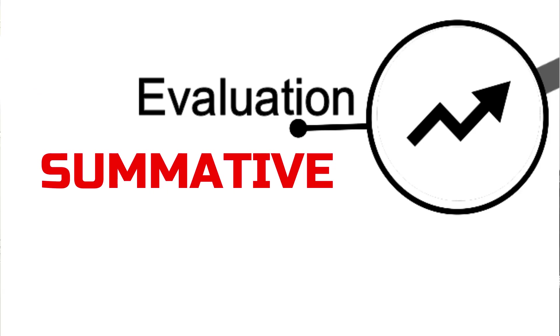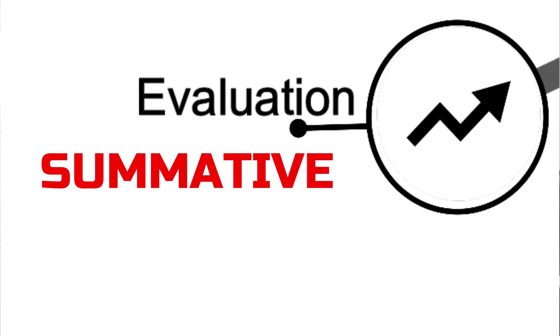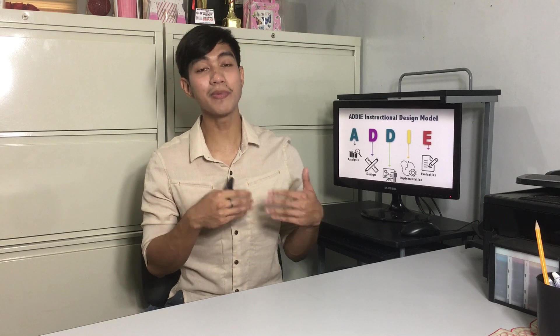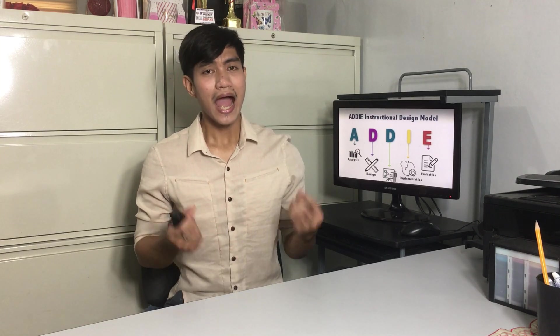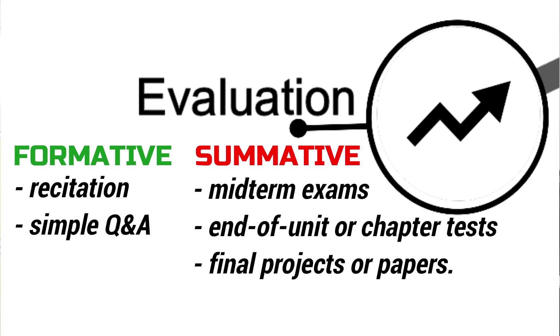Summative assessment, on the other hand, is used to evaluate student learning at the end of an instructional unit. It takes place after the process is complete — after a course or unit's completion — and is more focused on a product. Examples of formative evaluation include recitation and simple questions and answers during instruction, while summative evaluation examples include mid-term exams, end-of-unit tests, chapter tests, final projects, or different papers.